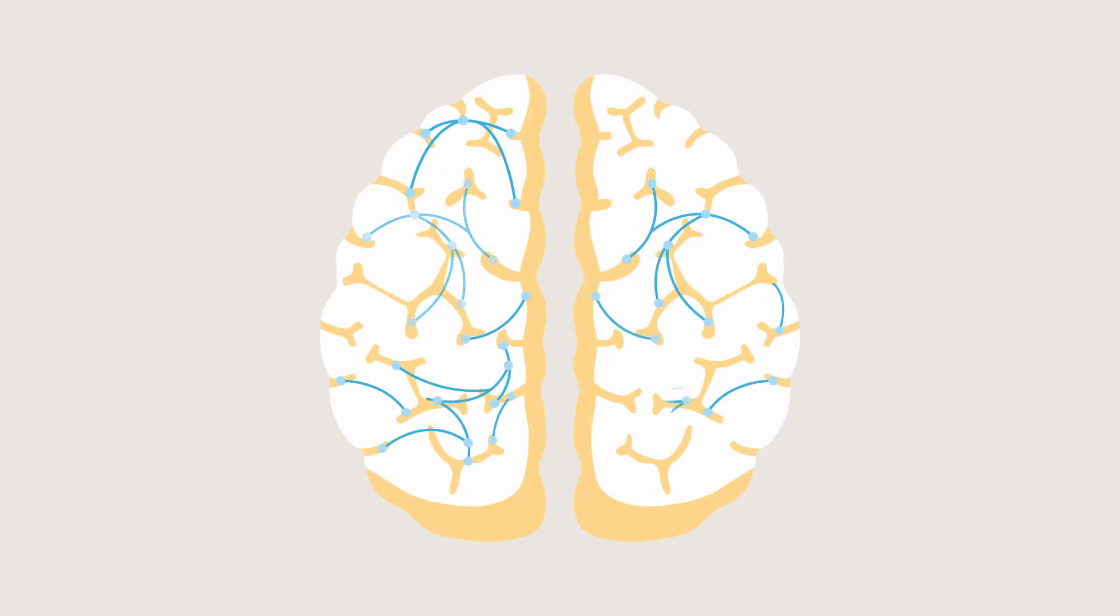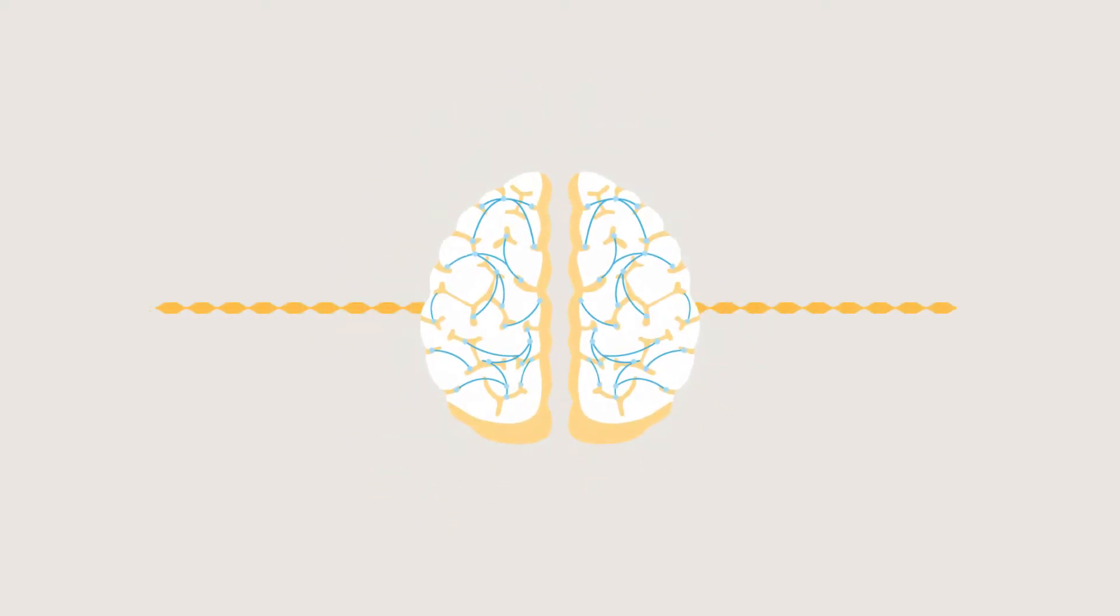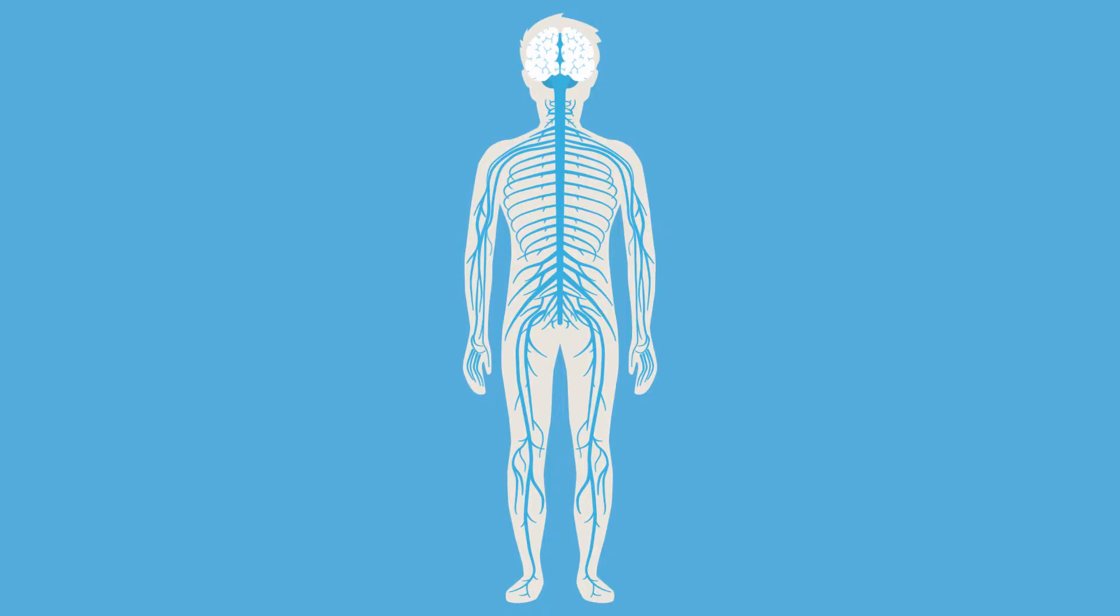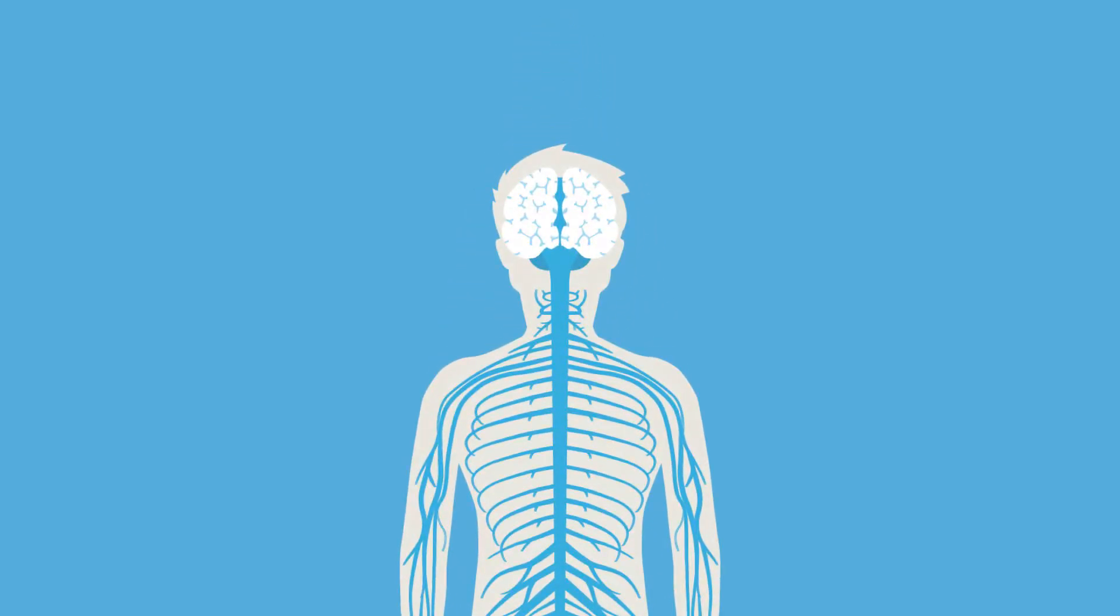What does neuroplasticity actually mean? Neuro means nervous system, which consists of the brain, the spinal cord, and all the nerves in our body that send and receive information to and from the brain. Plasticity means plastic or moldable, so neuroplasticity can be translated to moldable brain.